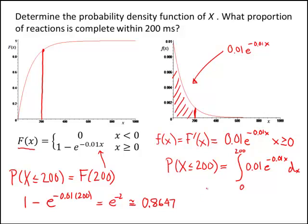So this is negative e to the negative 0.01x from 0 to 200, which is going to give us a negative e to the negative 2 minus, put 0 in here, a minus, a minus 1 is a plus 1.